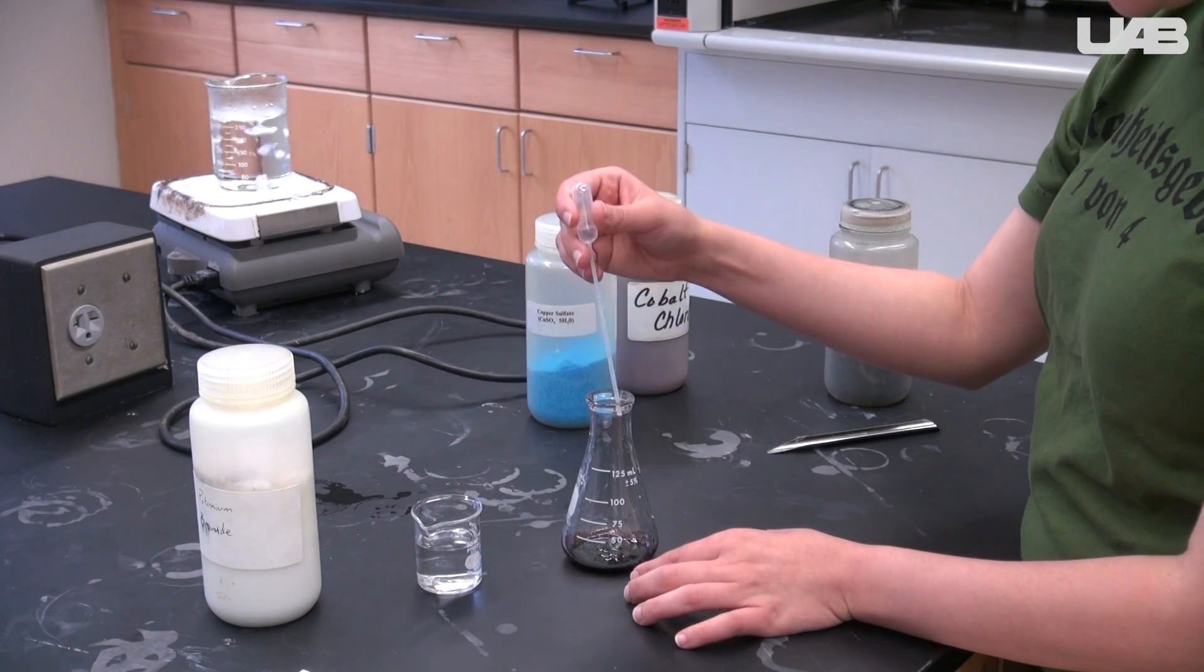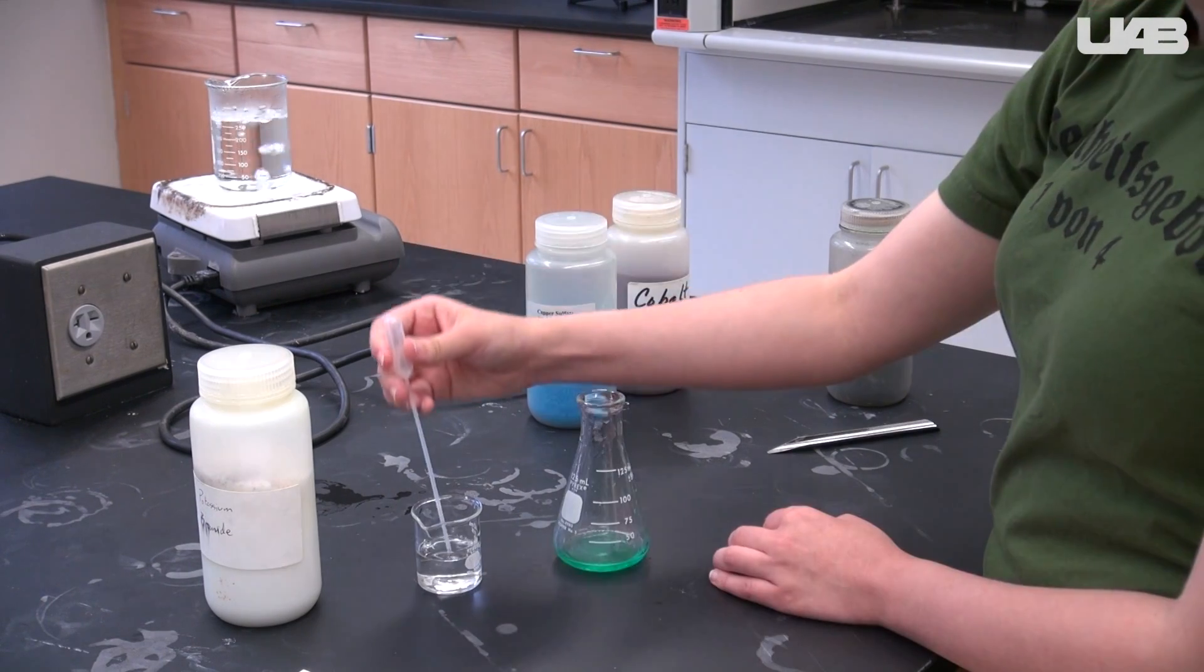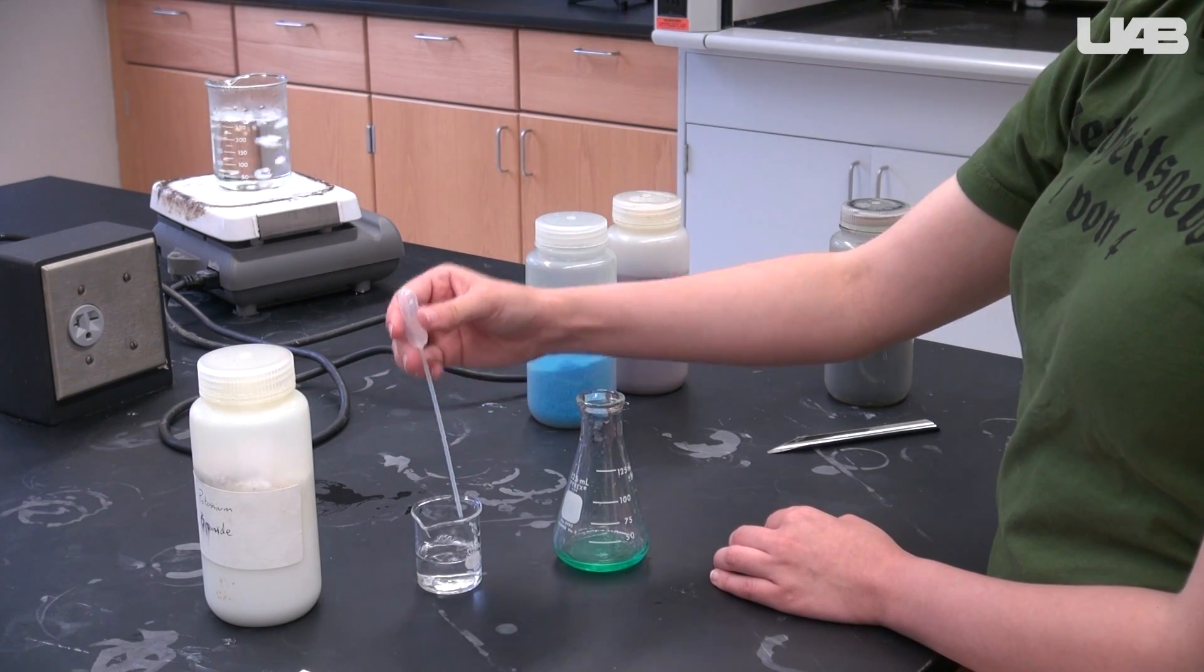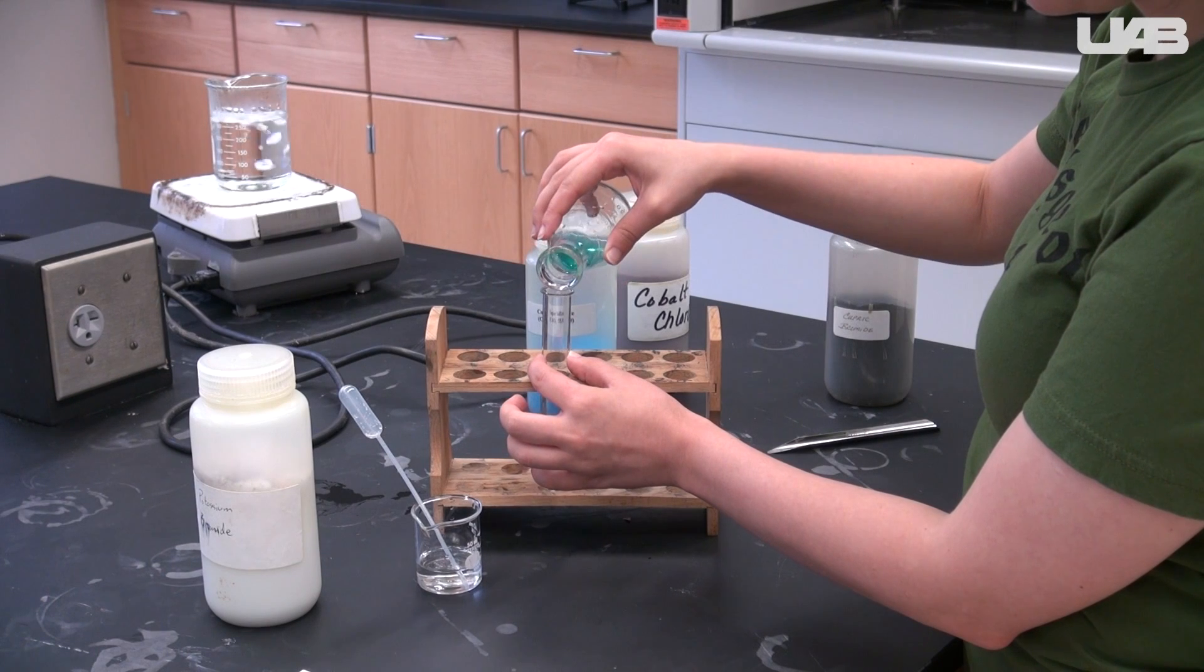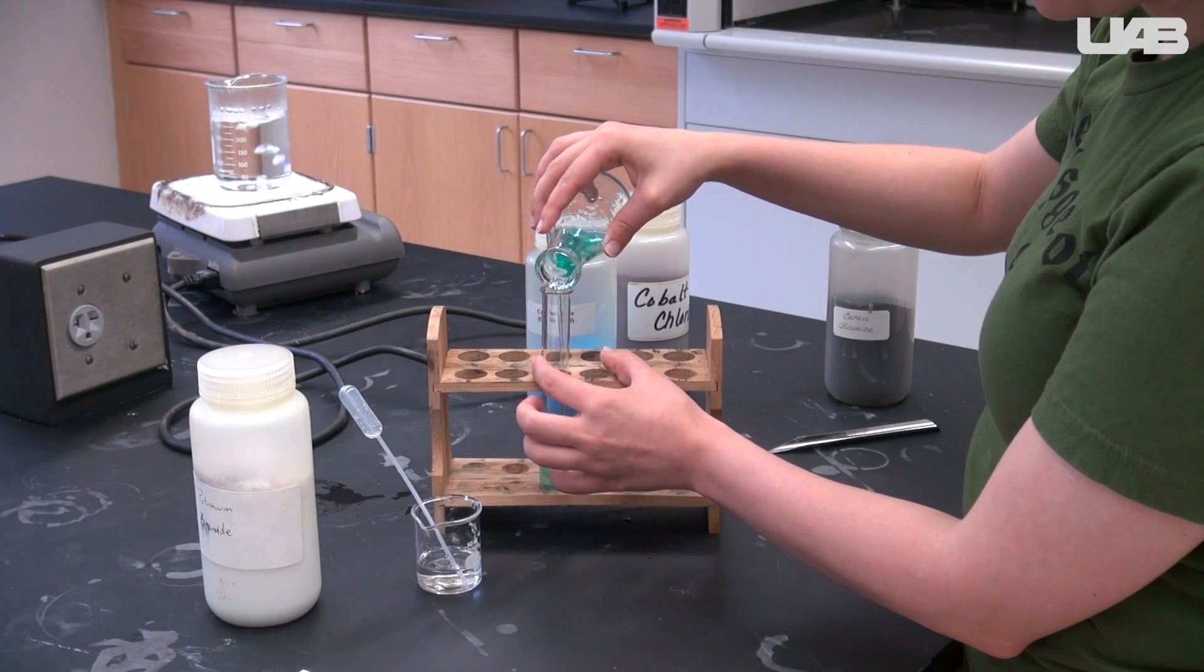Then keep adding distilled water 1 milliliter at a time until there is a total of 15 milliliters in the flask. Record your observations again and decide what the predominant species is now.